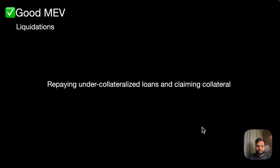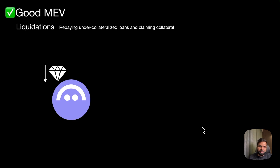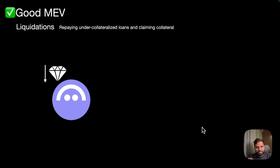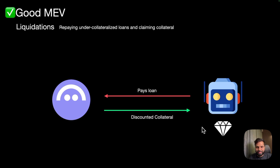Another example is liquidations, where repaying under-collateralized loans and claiming the collateral happens with the help of bots. For example, lending protocols like Aave, which are open source, have processes for liquidations. In scenarios where the value of collaterals on those lending protocols is dropping, there are multiple users or entities trying to grab that collateral at a discounted rate. A bot which looks at those transactions in the mempool sends a transaction with higher gas price to the lending protocol, pays the loan, and grabs the collateral at a discounted rate — thus keeping Aave solvent by taking the dropping collateral away from Aave and paying the loan to Aave. So in this case, it's a good MEV practice.